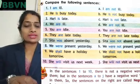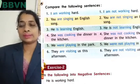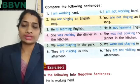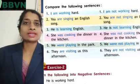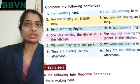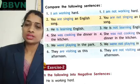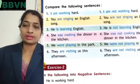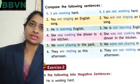There are some more sentences given on page number 84, number B. 'I am working hard.' 'I am not working hard.' 'You are singing an English song.' 'You are not singing an English song.' 'He is learning English.' 'He is not learning English.' 'She was cooking the dinner in the kitchen.' 'She was not cooking the dinner in the kitchen.' 'We were playing in the park.' 'We were not playing in the park.' 'They are visiting us this afternoon.' 'They are not visiting us this afternoon.'